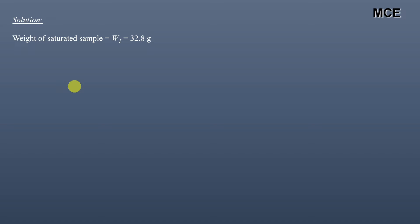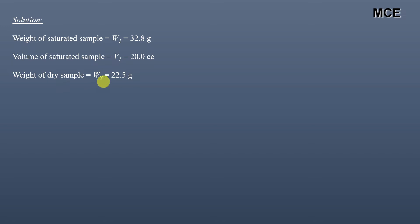We will now solve using the direct formulas. Weight of saturated sample, W1, equals 32.8 grams. Volume of saturated sample, V1, equals 20 cubic centimeters. Weight of dry sample, Ws, equals 22.5 grams. Volume of dry sample, V2, equals 14.5 cubic centimeters.